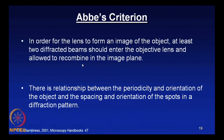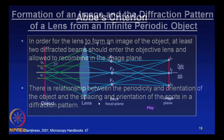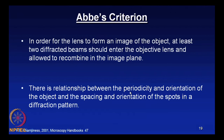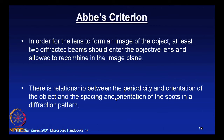Another important point: there is a relationship between the periodicity and orientation of the object and the spacing and orientation of the spots in the diffraction pattern. The diffraction pattern is forming in the back focal plane — this is the transmitted spot F₀, and F₁ and F₁-dash are the diffracted spots. To prove this relationship, we will now take up an example.